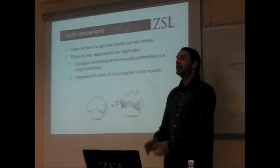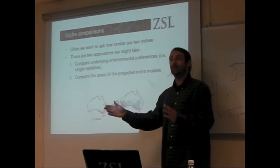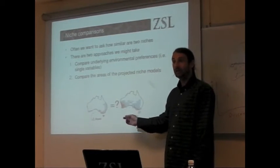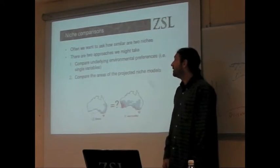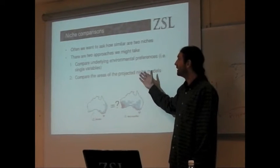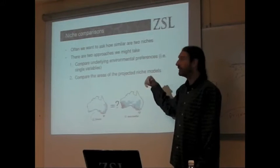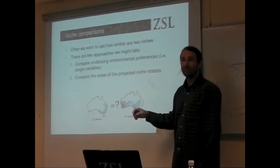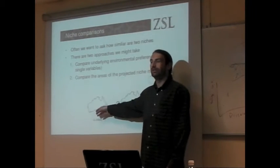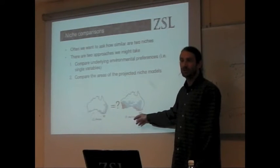If we're looking at a phylogeny, we've got many different closely related species, and we want to ask how similar are their niches. There are two approaches we might take for this. One is we could compare the underlying environmental preferences, so we could say what's the temperature range for this species, what's the temperature range for this species.